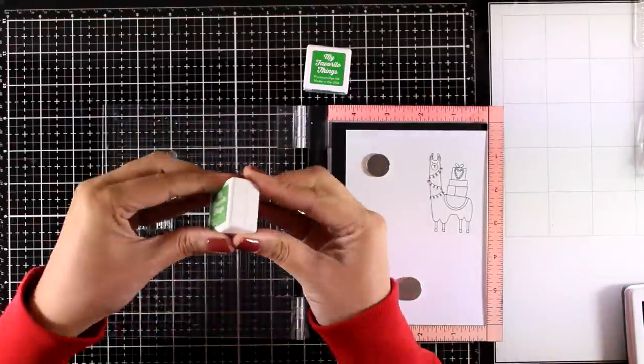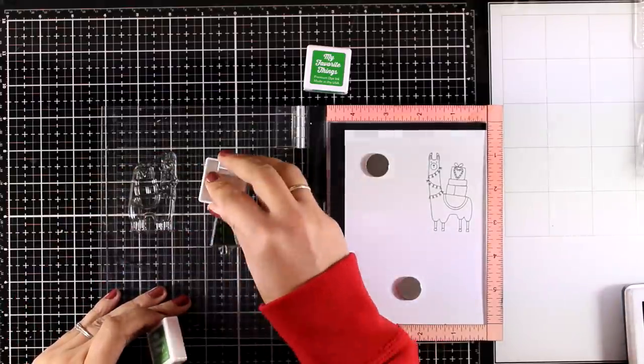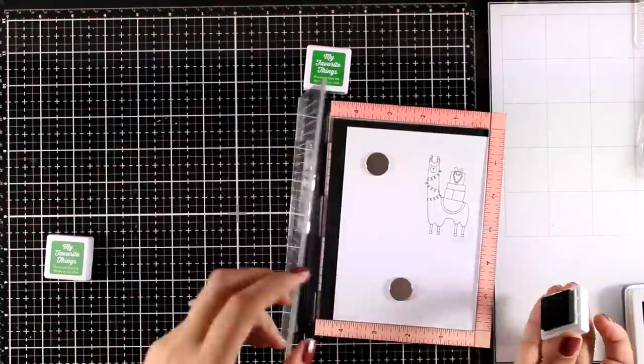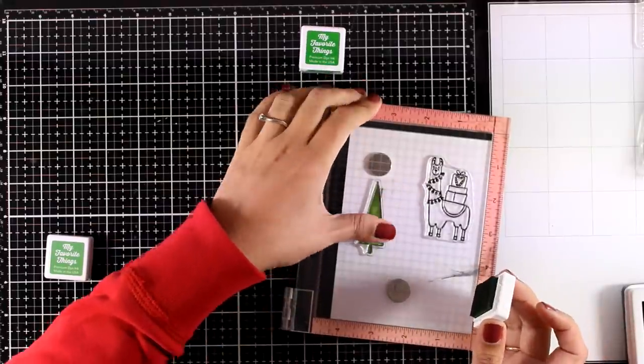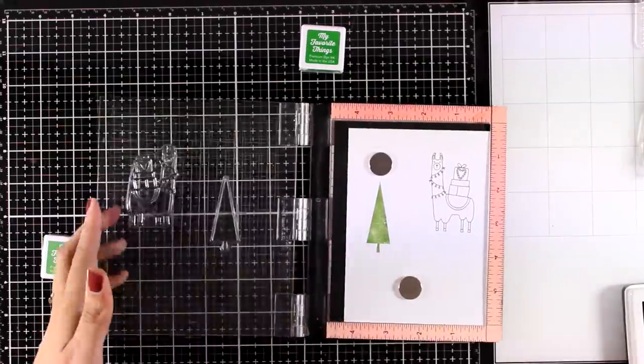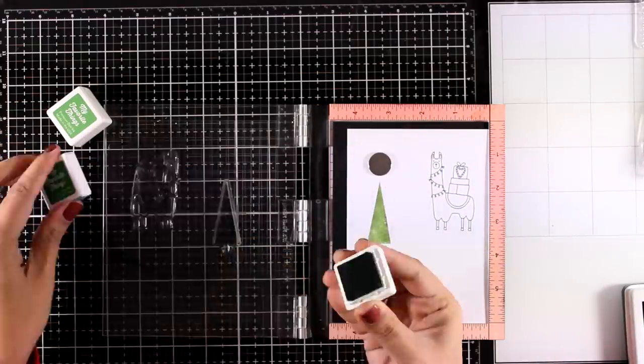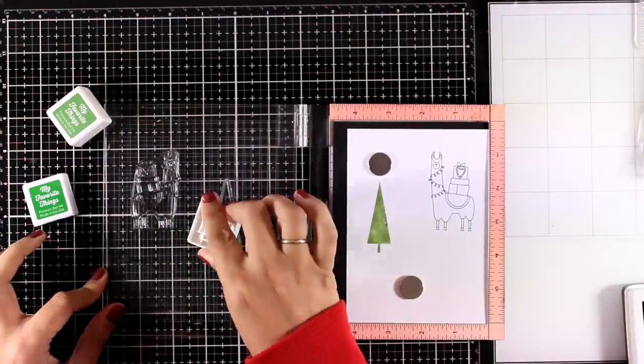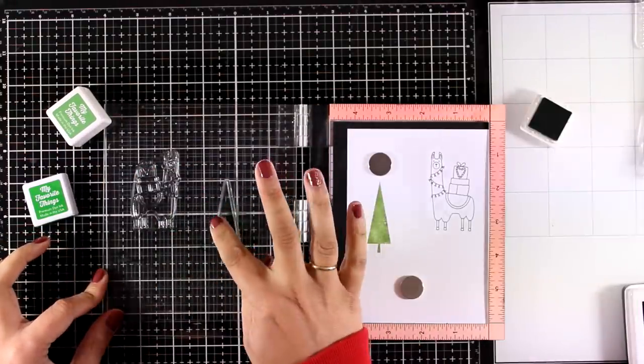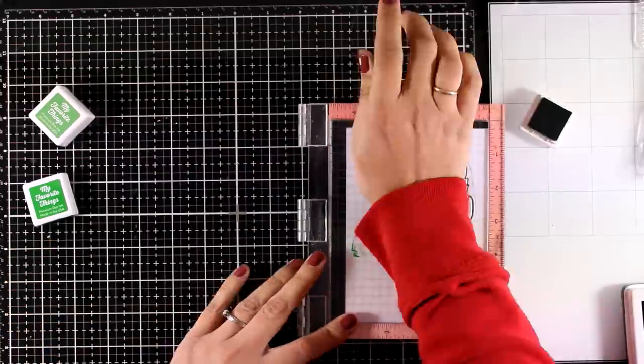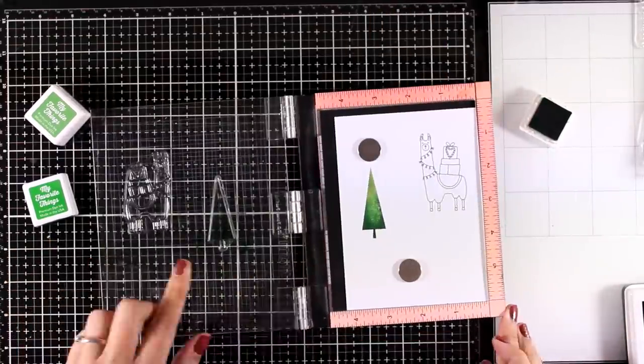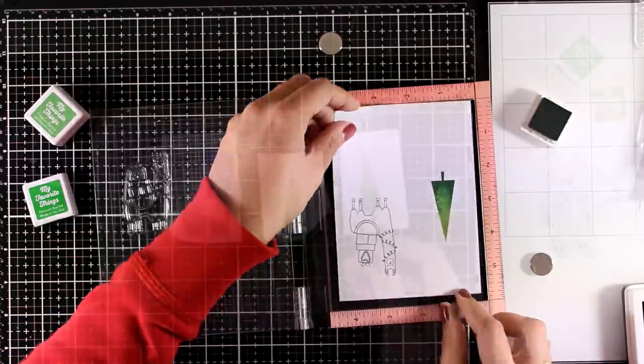For the tree I'm using two different shades of ink. This one is called Gumdrop Green and the darker one is called Dill Pickle. I used the lighter green shade to stamp my tree first, and now with the darker shade I'm only going to touch the base of the tree. I'm also going to blend it out with my finger. I end up having a lovely shading on my tree without too much effort.